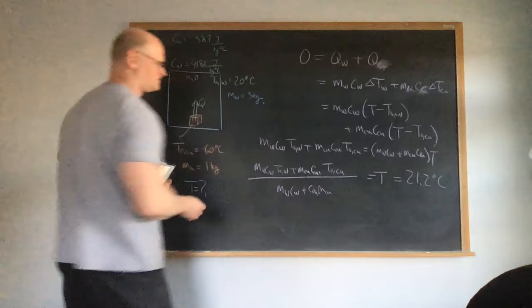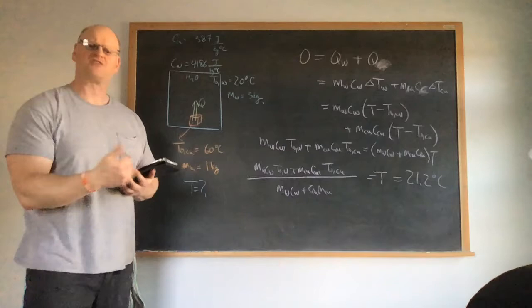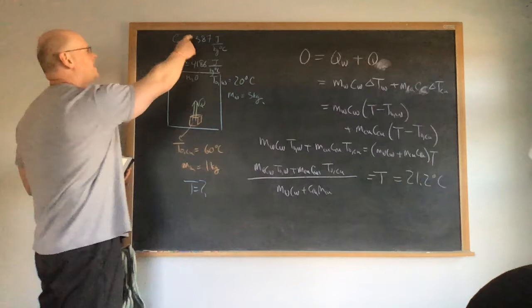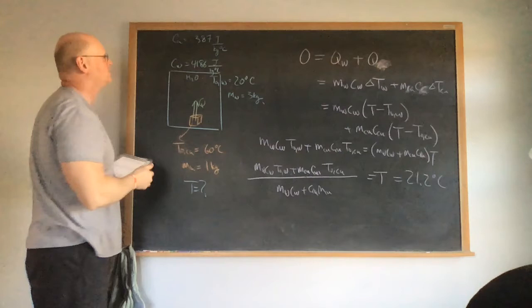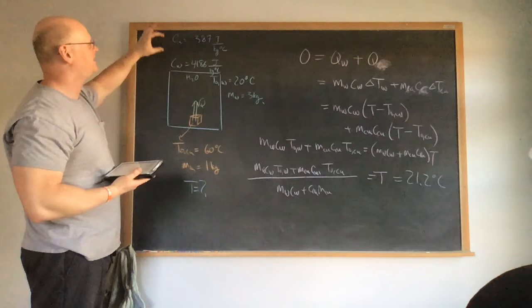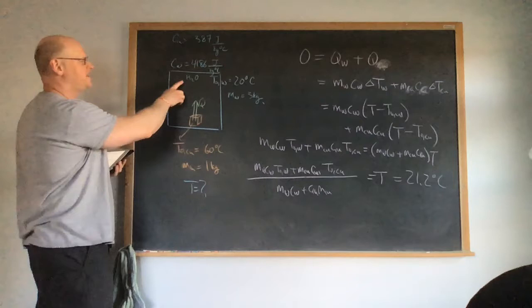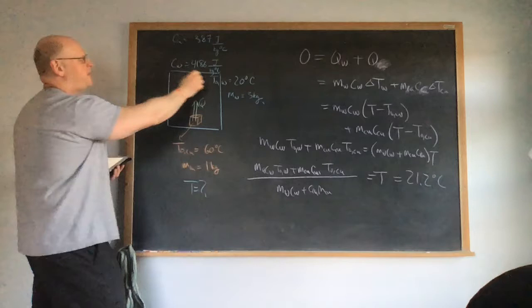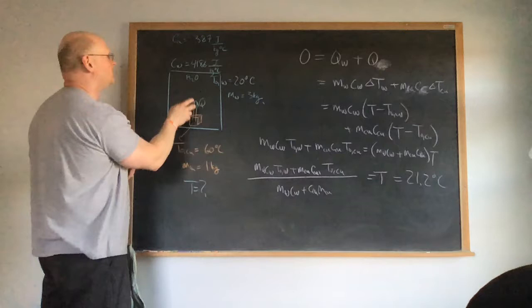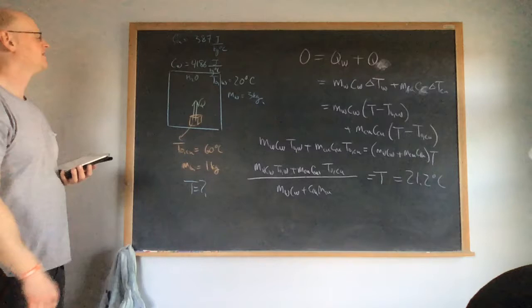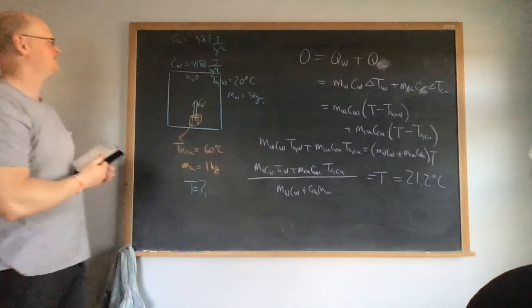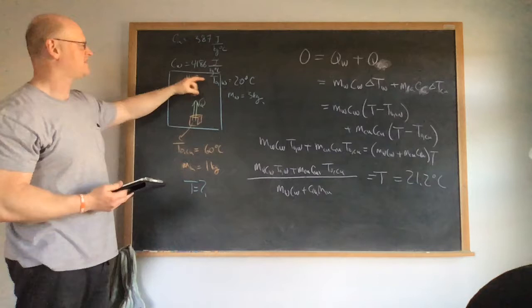Does this make sense? Yes. Copper has a low specific heat, so it doesn't take much energy to change its temperature — meaning the copper will undergo a much greater temperature change than the water. Water has a high specific heat and greater mass, so the energy flowing in barely changes the water's temperature. Therefore, the final temperature should be close to the initial temperature of the water, which 21.2°C confirms.